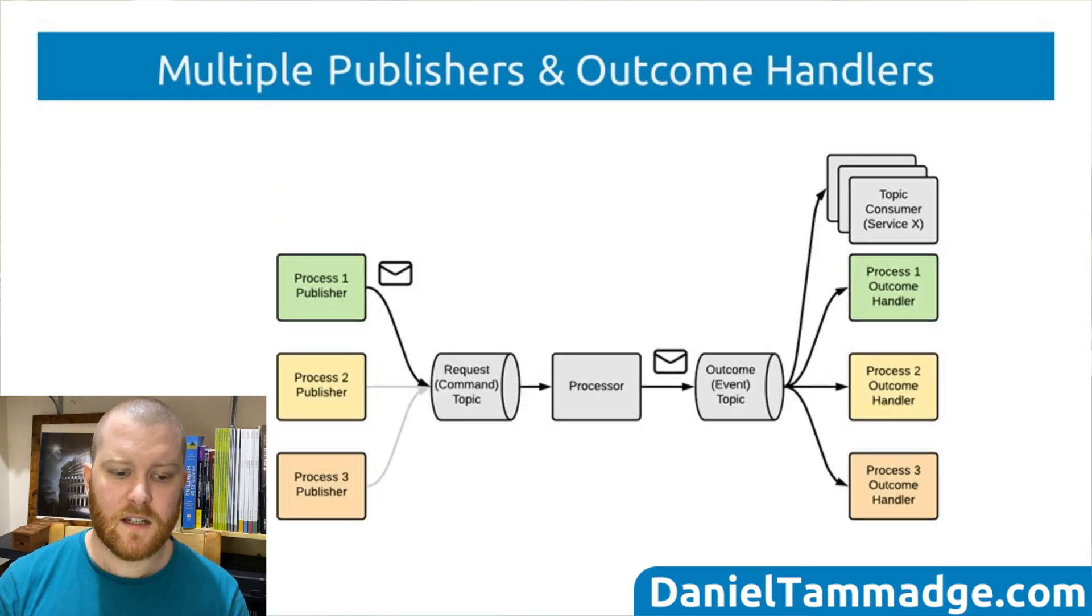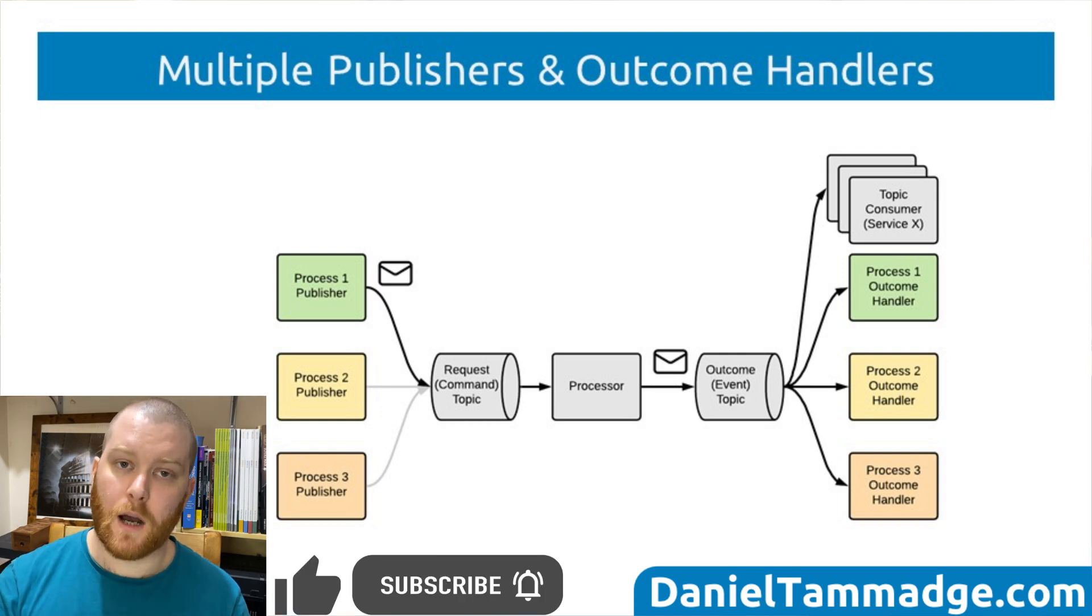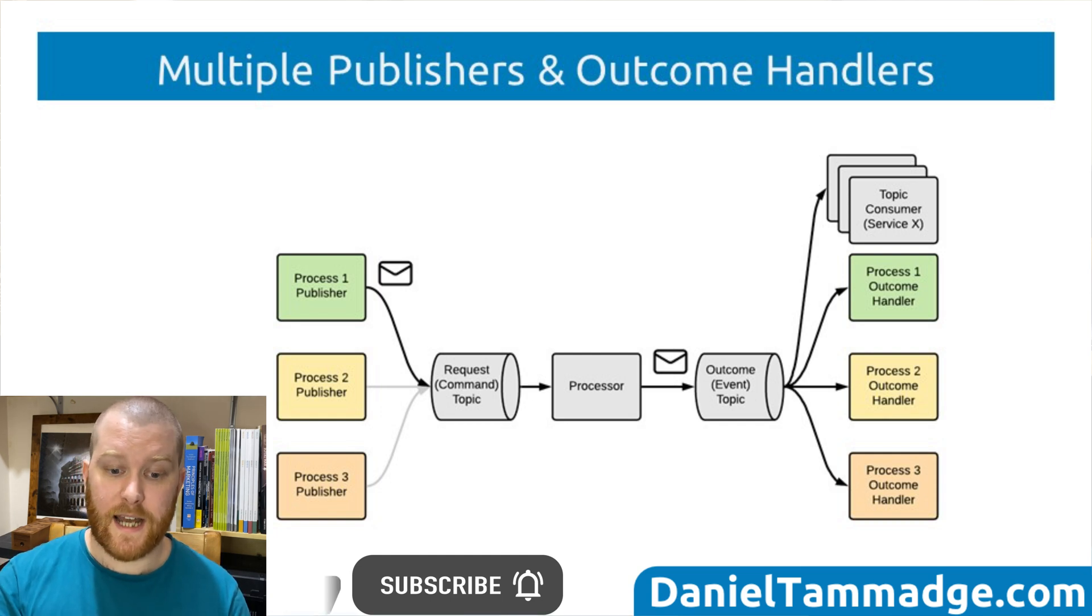So you would probably have the need for different services to handle the different outcomes for the different processes. For example, it could be a different system. However, if you are only using one topic, you would need to consume all the events, all the messages in that topic, and you'd have to filter out the messages which do not belong to a particular process or system, which could be costly.